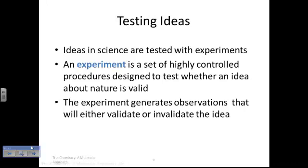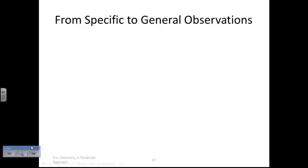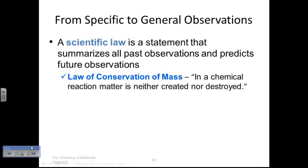When we begin testing ideas, we generate data. Data must be reliable. We use what's called a control with just one variable. We know an experiment generates observations that begin to validate, or perhaps even disprove, what we were explaining or attempting to explain. That testing of ideas creates that experimentation.